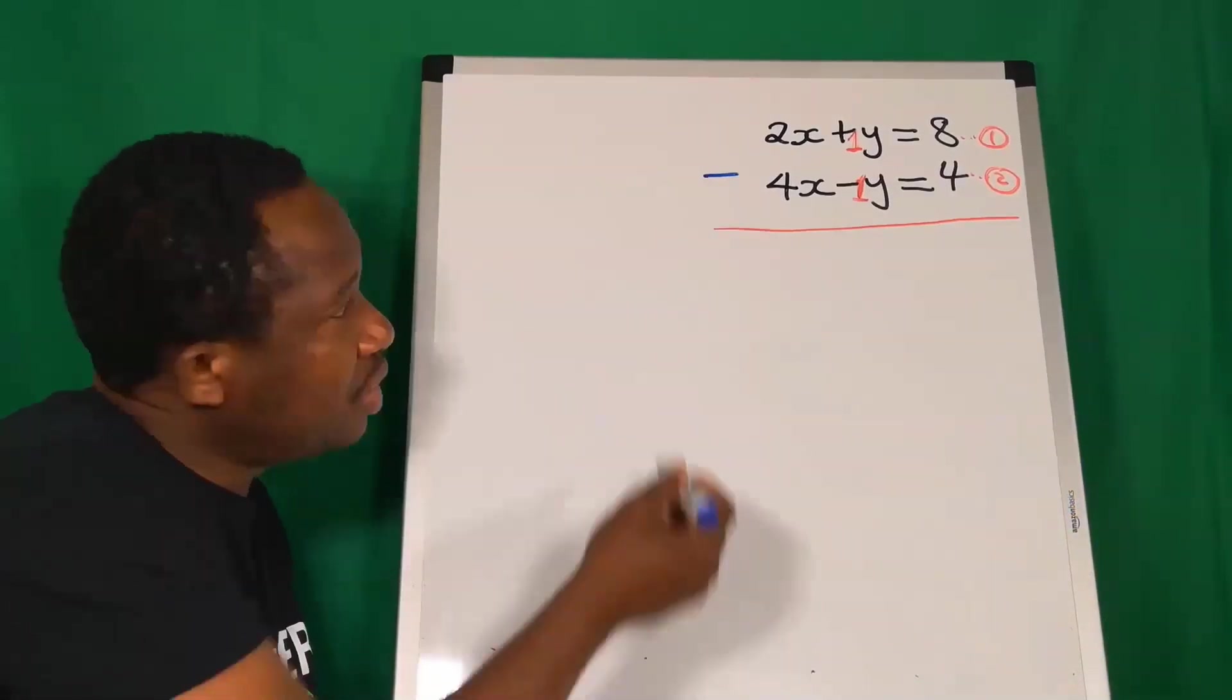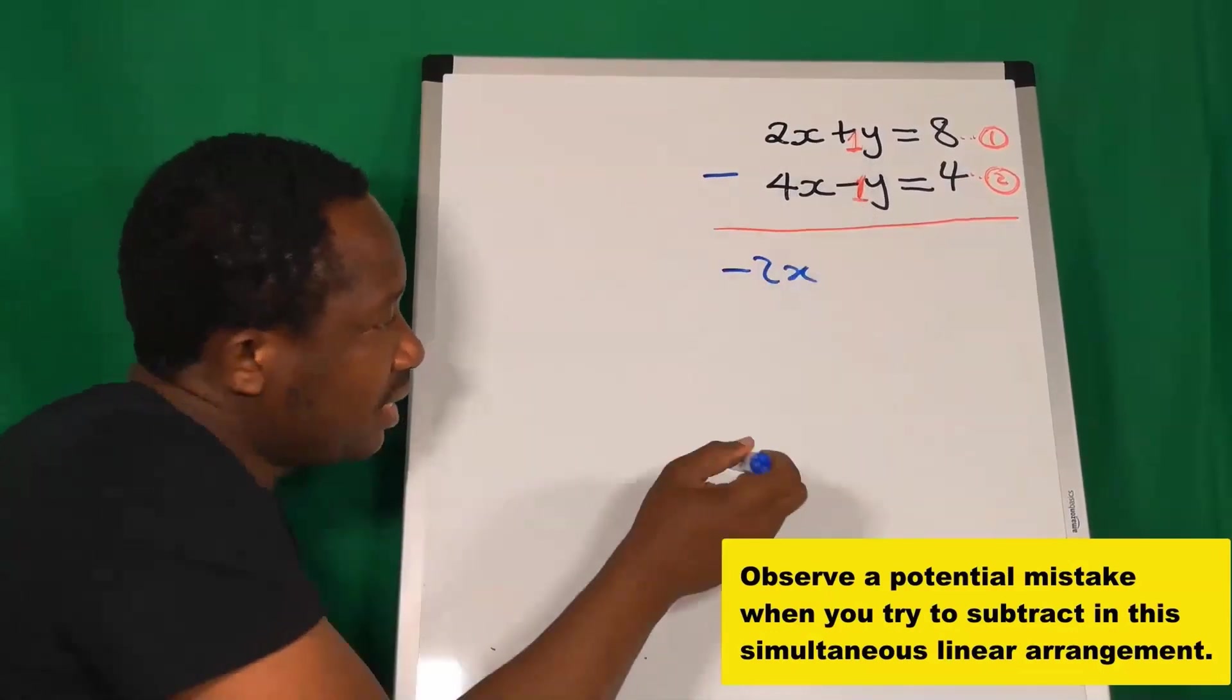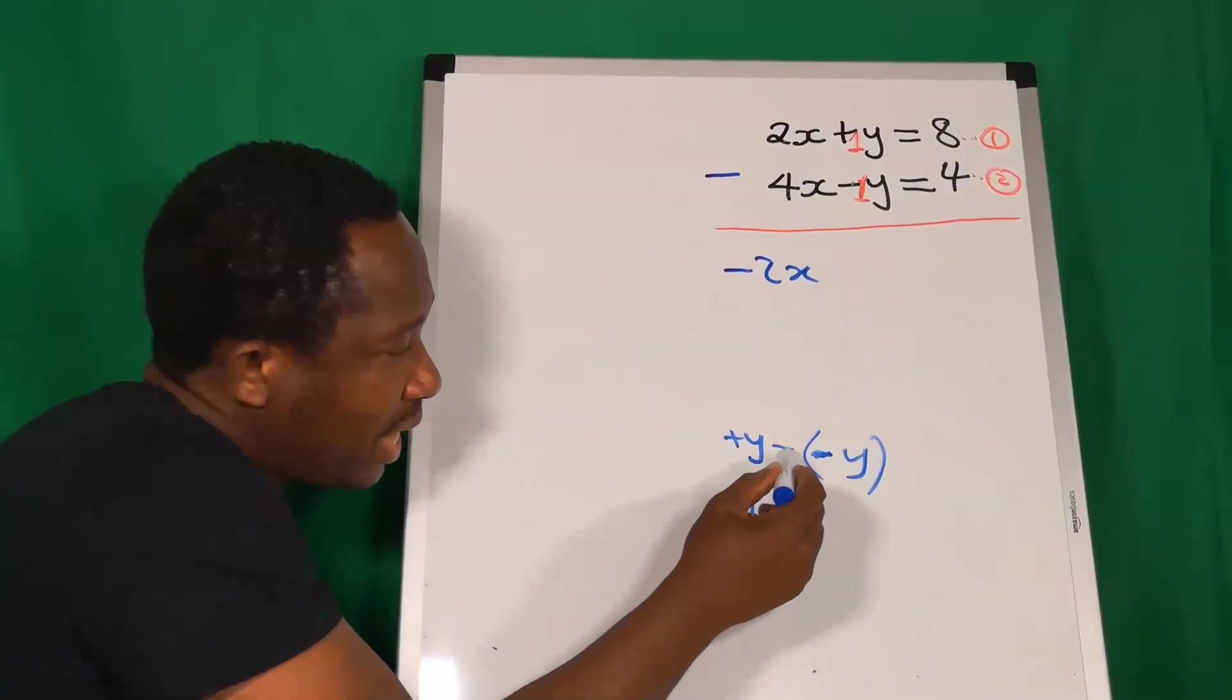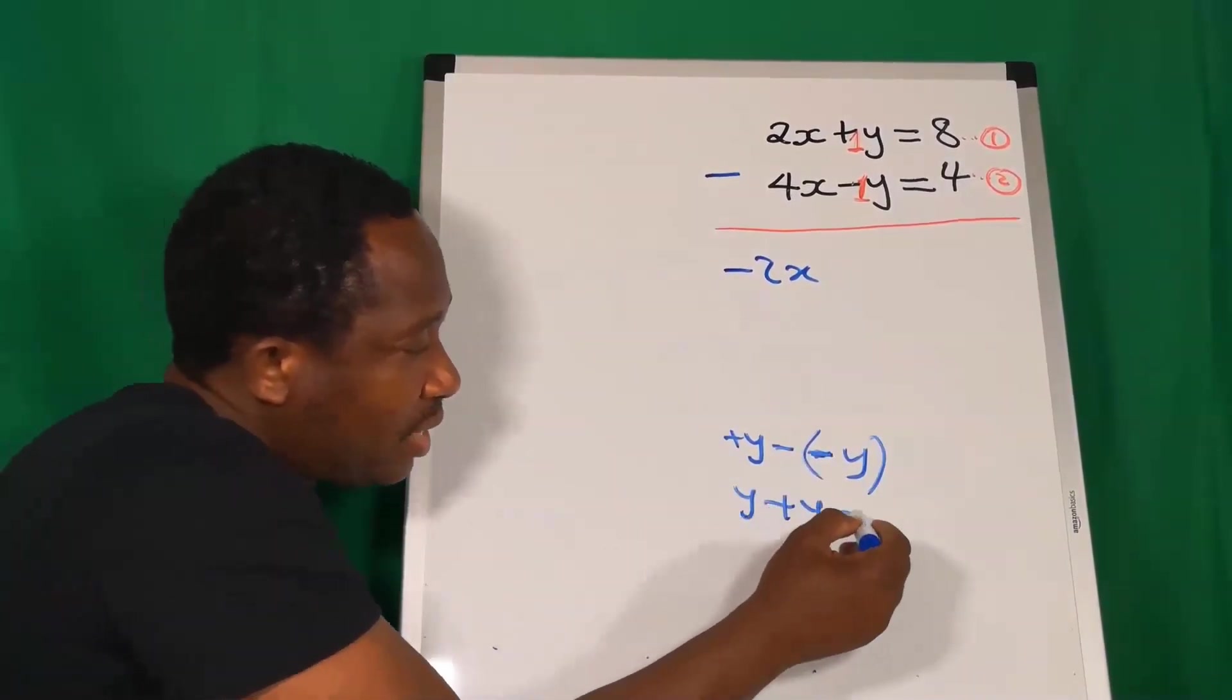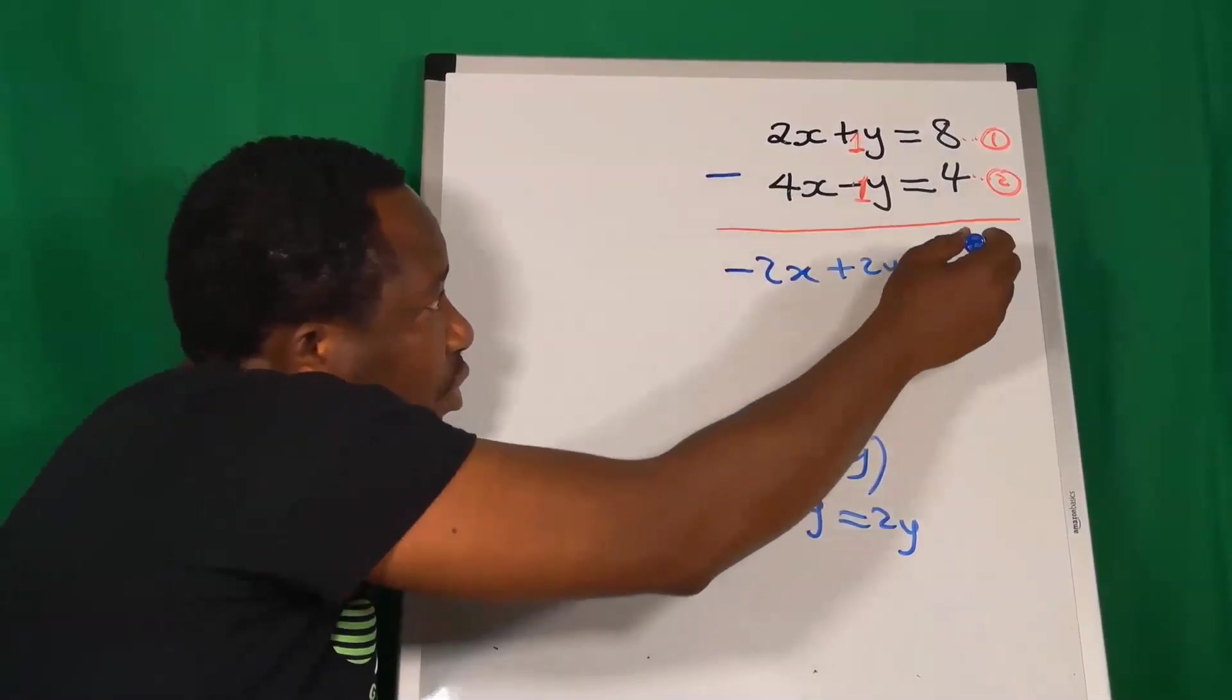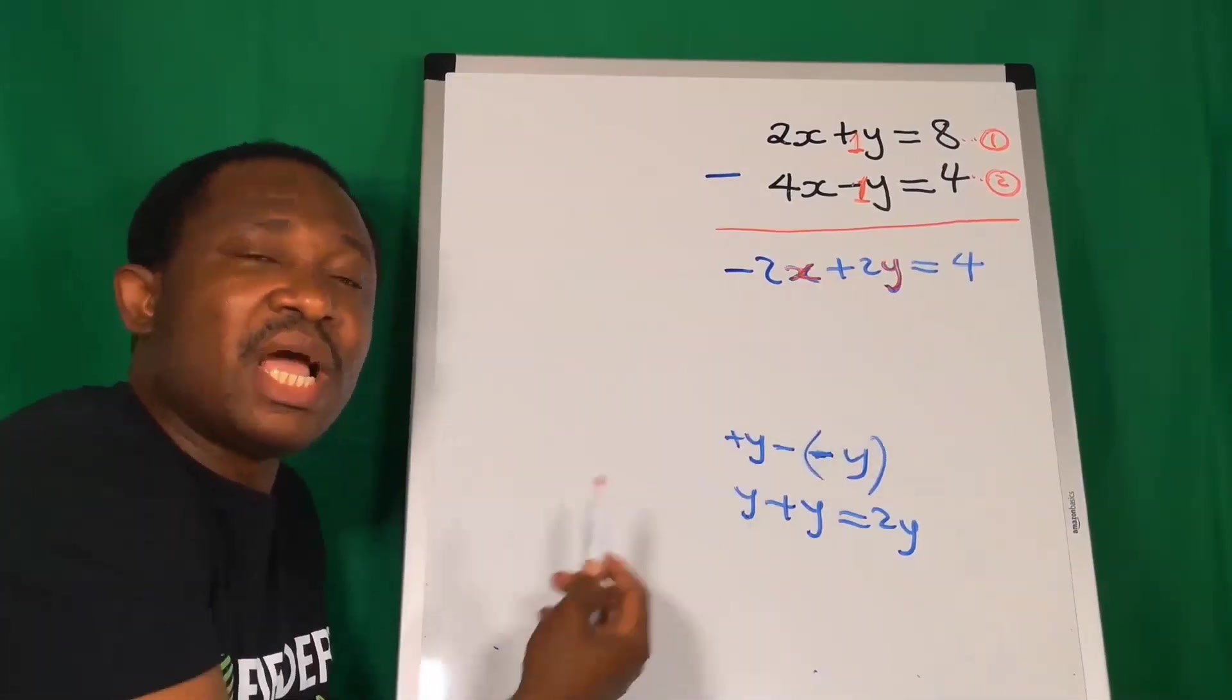2 minus 4 will give you -2x. Y, which is +y, minus... then there is a minus here y, and you're going to have that y minus times minus is plus y. Y plus y will give you 2y. On the other side, 8 minus 4 will give you 4. You can see that we still have two unknown variables, which has defeated the purpose of elimination method. Hence, instead of minus, we're going to use a plus.